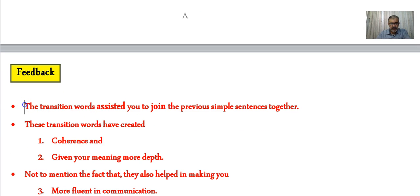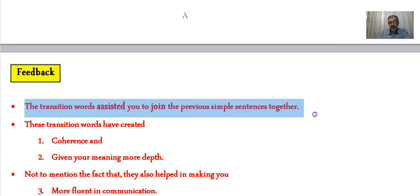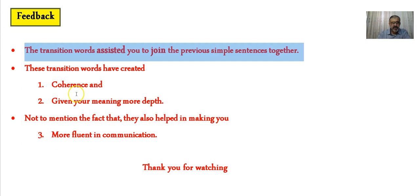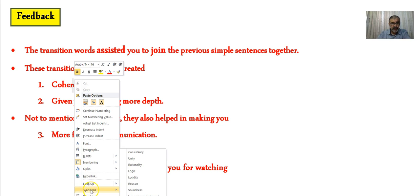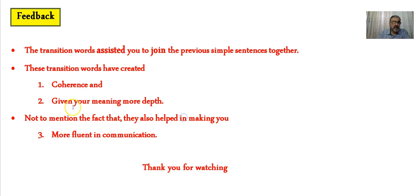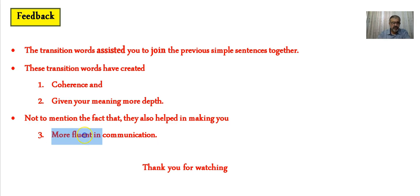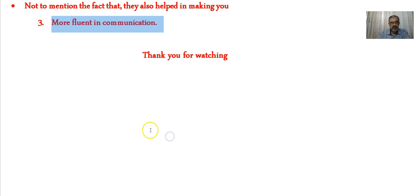Feedback: The transition words — just as we said at the start of this tutorial — assisted you and will assist you to join simple sentences together. They created coherence, which as we said also means unity, consistency, rationality, and logical acidity. They also gave your meaning more depth, and they helped make you more fluent in communication. Thank you for watching.